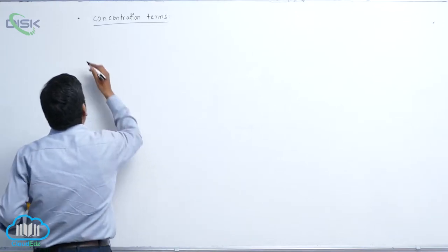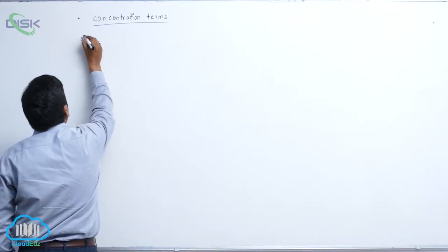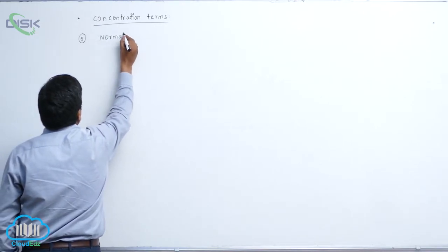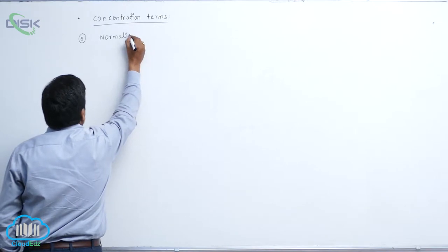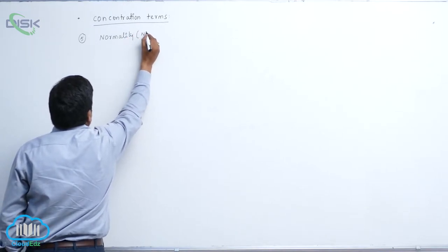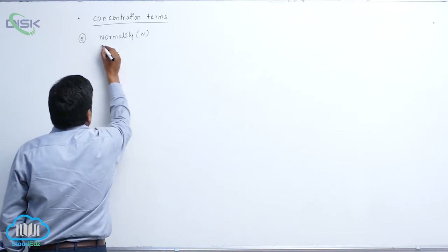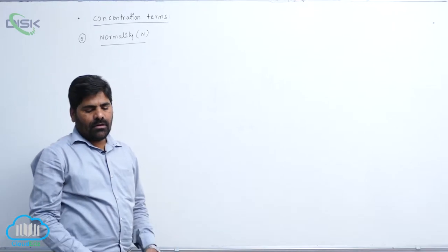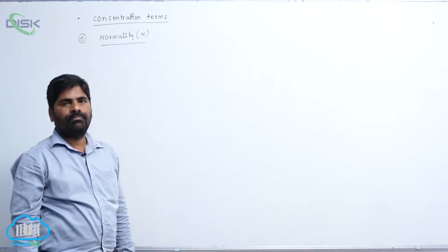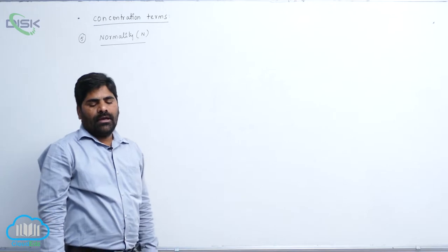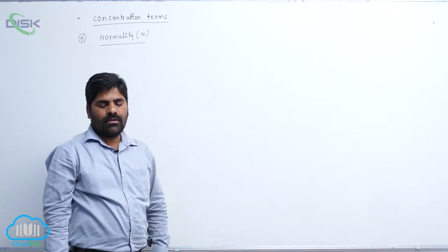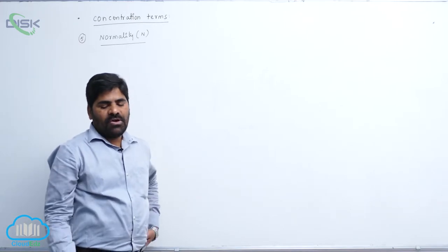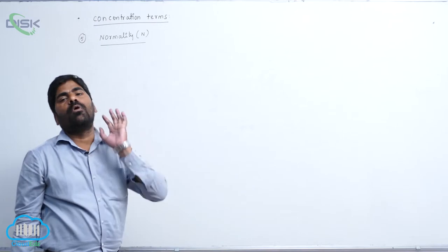Fifth concentration term is normality, denoted by capital N. It relates to gram equivalents of a solute present in 1 litre of solution - not the number of moles.